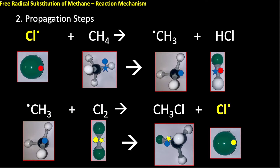A key point is that I started with a chlorine free radical in step one and created another chlorine free radical in step two. That's why propagation drives the reaction — I continually regenerate a chlorine free radical to go through the cycle again. Propagation is where I take my reactants, methane and chlorine, and make my products.